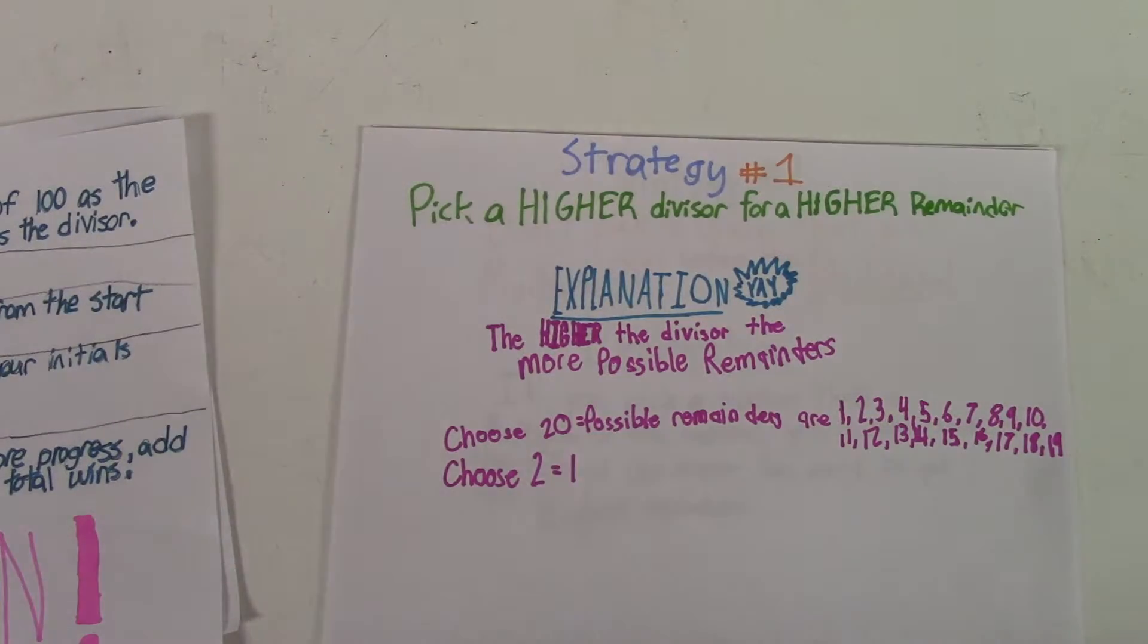We're teaching you how to play the game so you need to know how to win. So we're giving you three strategies. The first strategy is picking a higher divisor for a higher remainder.